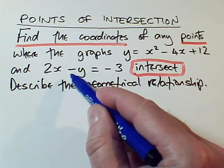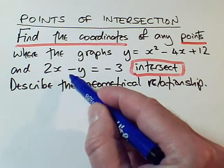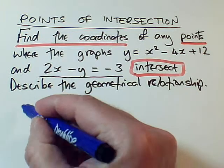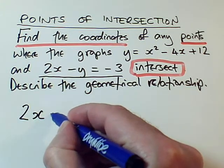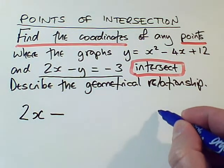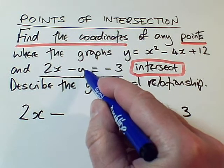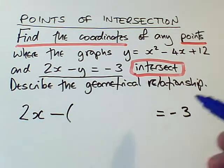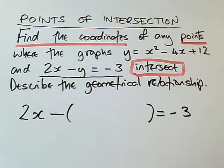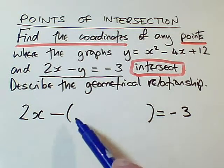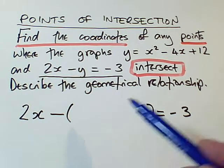This minus sign means I'm going to have to be careful with brackets and signs. Let's copy out this equation here: 2x minus y equals minus 3. I've left a gap because this is what I'm going to substitute in. When we're substituting, it's safest always to use brackets. So inside these brackets, I'm going to put what y is.